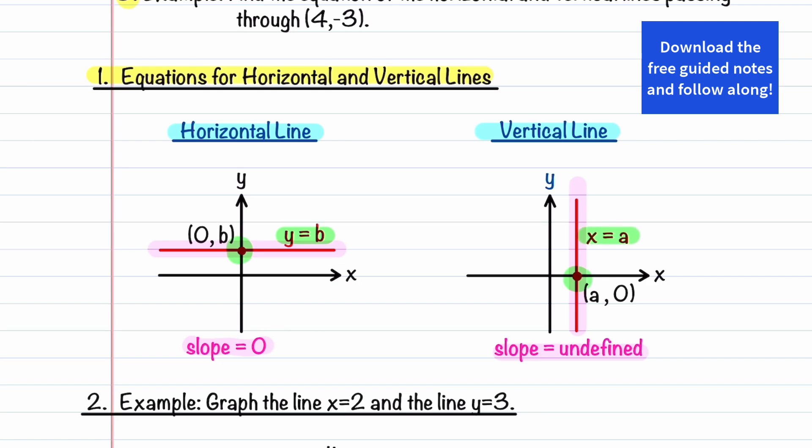Just to recap: a horizontal line is written as y is equal to a constant, and a vertical line is written as x is equal to a constant.